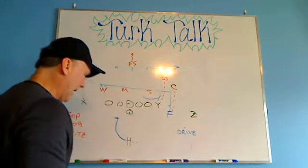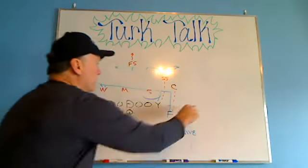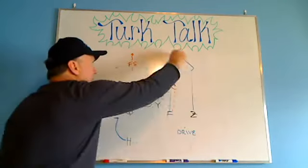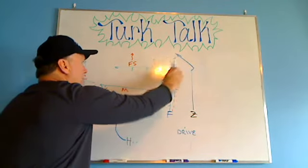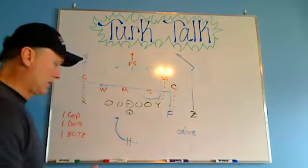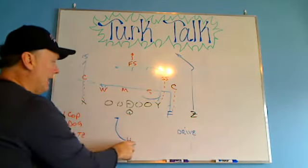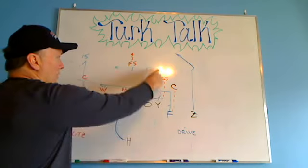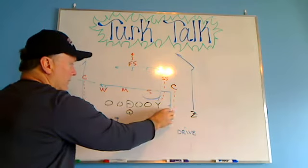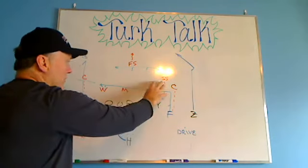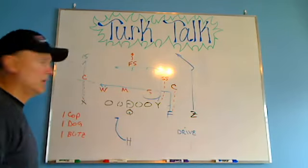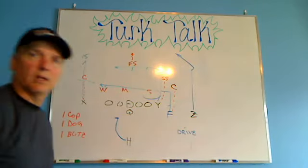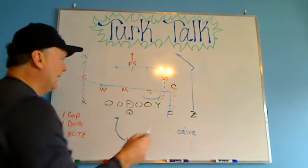Now drive right here puts the Z over the top on what I call an action post. So that's the drive concept with a single back. Single back drive is a three by one. You still have the drive concept. You have a cross route. You have a shallow cross with a possible pick right here. Your X still runs his comeback, 15 yard comeback. Again, you could put him on anything you want as well. But that's the drive.